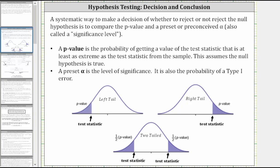Welcome to a lesson on one-sample hypothesis testing. A systematic way to make a decision on whether to reject or not reject the null hypothesis is to compare the p-value and a preset alpha called the significance level. A p-value is the probability of getting a value of the test statistic that is at least as extreme as the test statistic from the sample, assuming the null hypothesis is true.